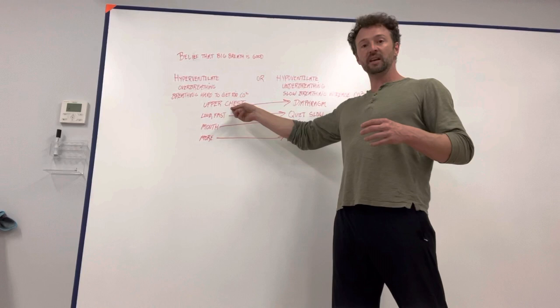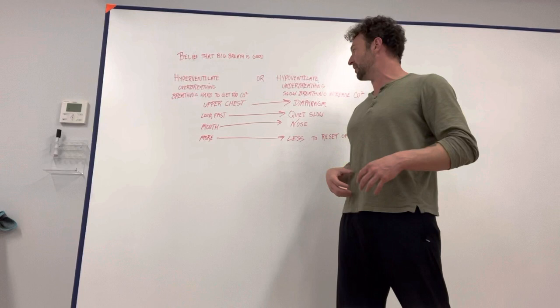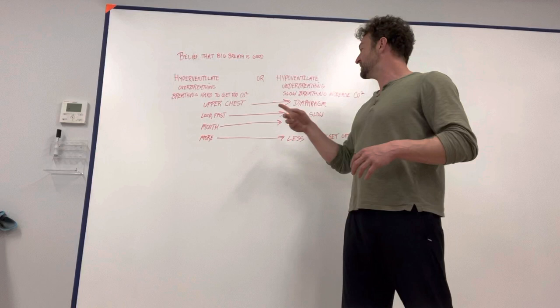And so instead of upper chest breathing, we want to breathe diaphragmically. We want to push the diaphragm down, we want to push the shoulders down, we want to push the breath down. Instead of loud and fast, we want to breathe quiet and slow.